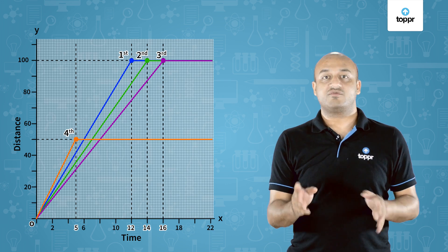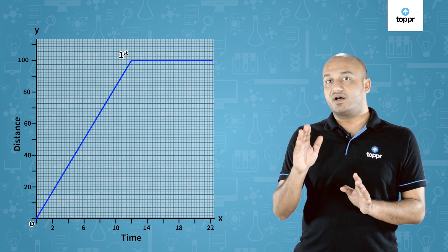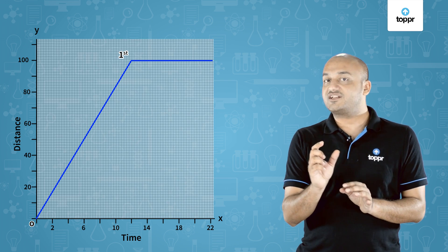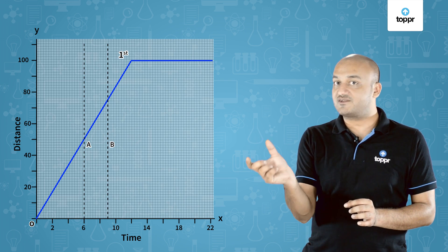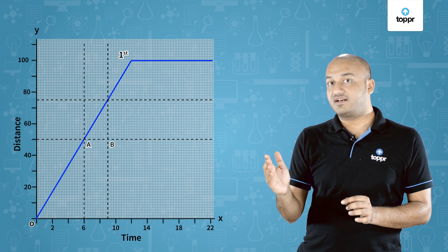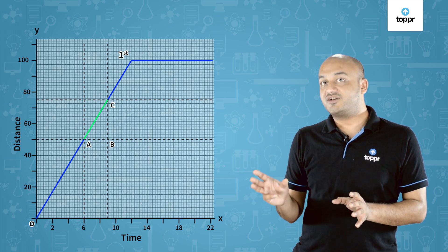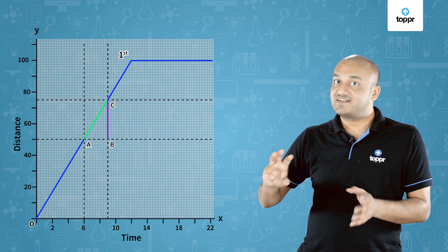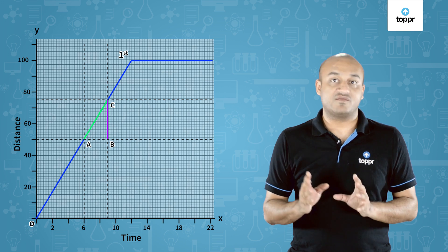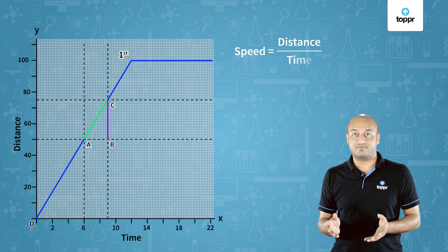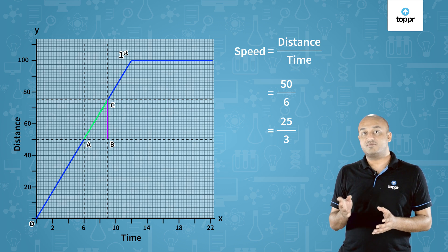Now let's look at some interesting observations, focusing on runner number one. We identify two points A and B on his graph. A is at 3 seconds and B is at 9 seconds. Drawing a horizontal and vertical line from these points, they meet at point C. Section AC is the duration of time for section AB, and section BC is the distance traveled. Speed is distance divided by time, so the speed comes out to be 50 by 6, or 25 by 3 meters per second.